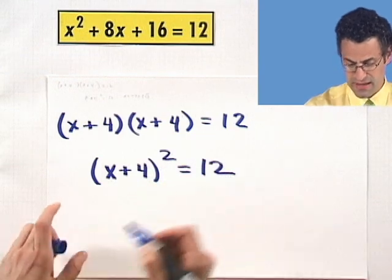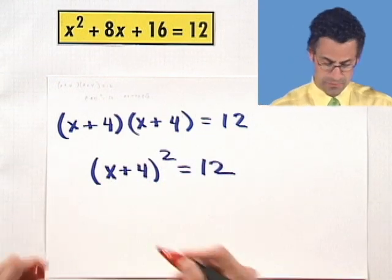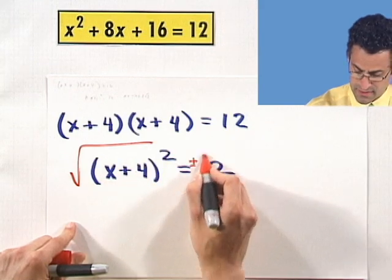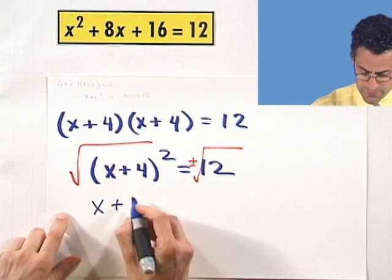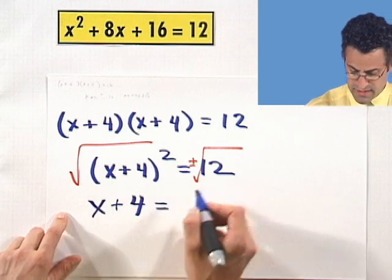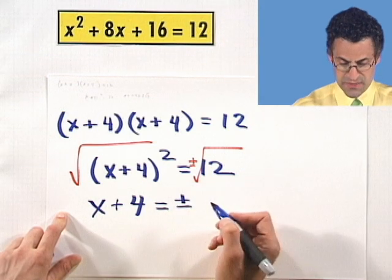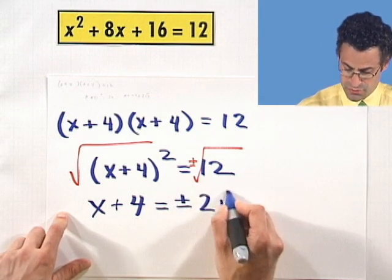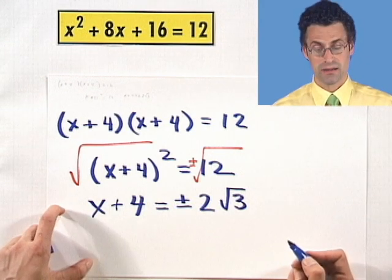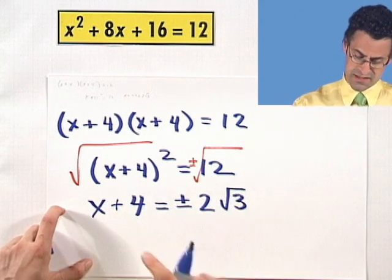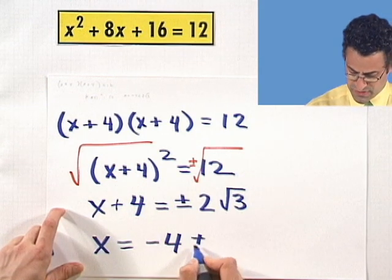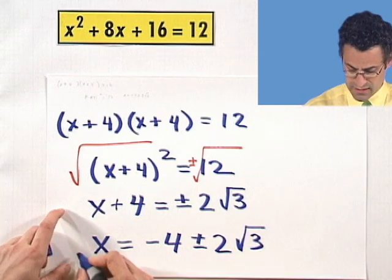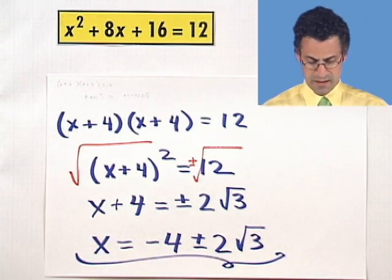So I can write it this way, and now, again, I can take plus or minus square root of both sides. And what do I see? On this side, I see x plus 4 equals plus or minus the square root of 12, which is 2 square root of 3. And then I just bring the 4 over by subtracting 4, and I see that x equals negative 4 plus or minus 2 square root of 3. The answer is getting a little more complicated, but you see that this was actually a perfect square hidden in disguise.